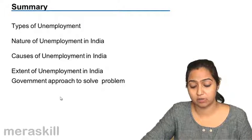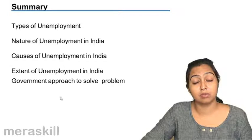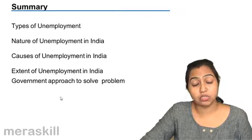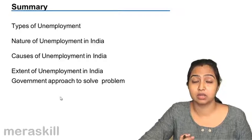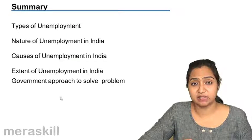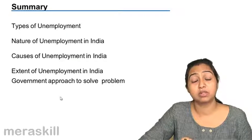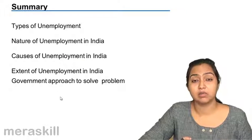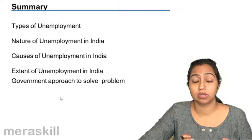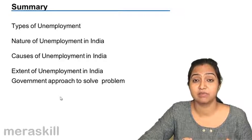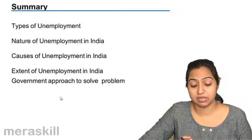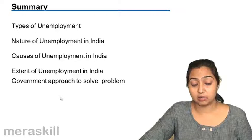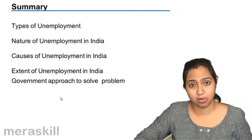The approach adopted by the government is that they are stressing on labor-intensive industries. They are trying to promote skill development so that people can get into self-employment. Self-employment generation can also happen if people are skillfully developed. With this we come to the end of the chapter on unemployment.